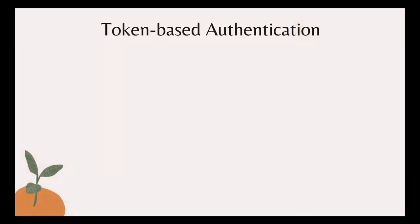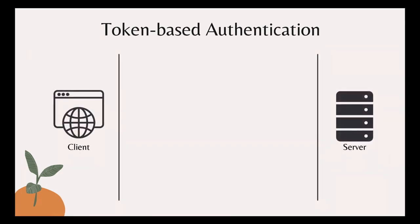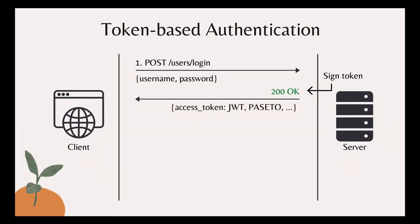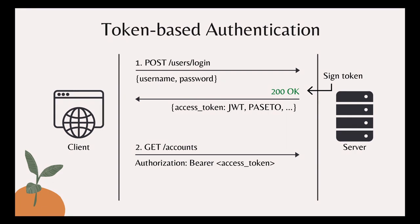First, let's talk a bit about token-based authentication. Basically, in this authentication mechanism, the client will make the first request to login the user, where it provides the username and password to the server. The server will check if the username and password are correct. If they are, the server will create and sign a token with its secret or private key, then sends back a 200 OK response to the client, together with the signed access token. The reason it's called an access token is that later the client will use its token to get access to other resources on the server. For example, let's say the client wants to get the list of bank accounts which belong to the login user — it will make a GET ACCOUNT request to the server, where it embeds the user's access token in the header of the request.